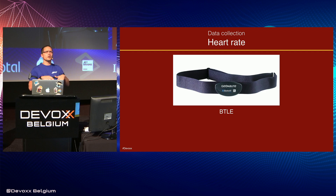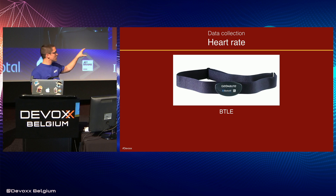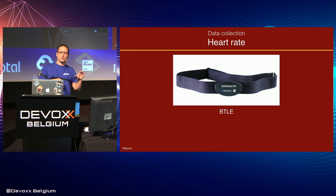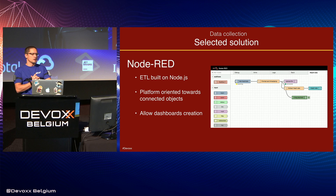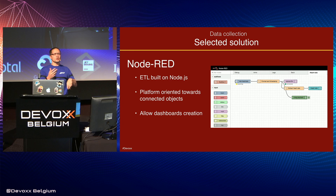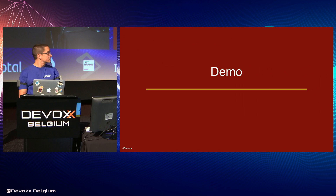Another piece of data we wanted to collect was the heart rate. We chose to use a classical heart rate monitor you can find in every sports shop — this one uses Bluetooth Low Energy to communicate. We needed a solution to collect this data because we can't modify the heart rate monitor to push data directly into the MQTT broker. For this, we use Node-RED, an ETL built on top of Node.js, a platform oriented toward connected objects with many plugins that also allows building dashboards.